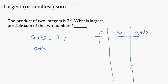So one possibility is 1 times 24 is 24 and the sum is 25. Then we have 2 times 12 is 24 and the sum is 14. 3 times 8 is 24 and that sum is 11. 4 times 6 is 24, the sum is 10, and then it gets smaller back the other way.